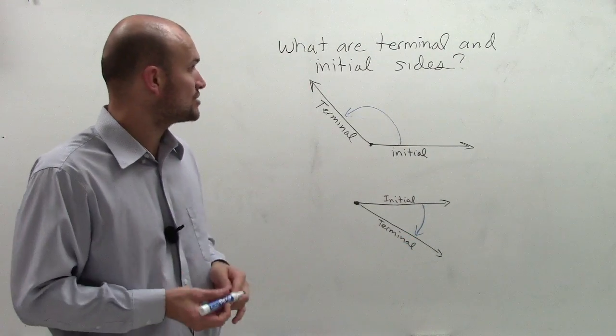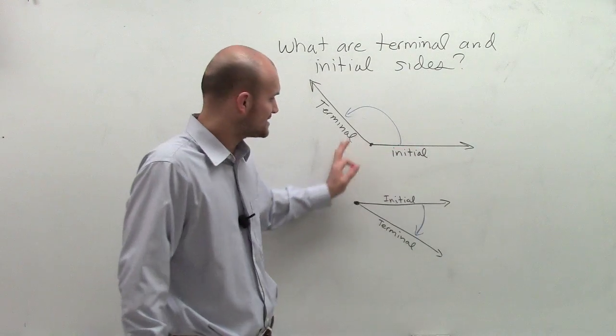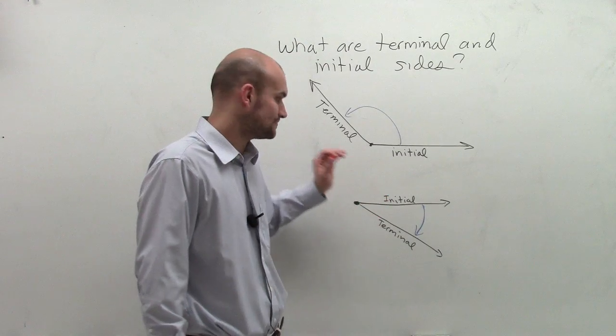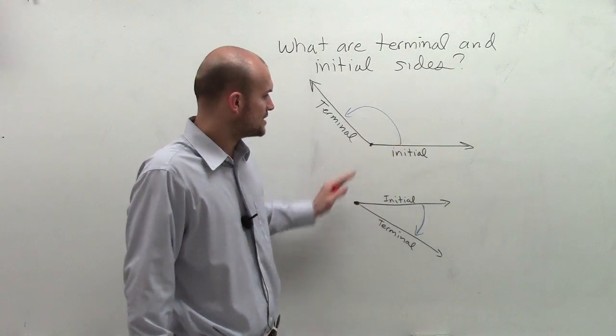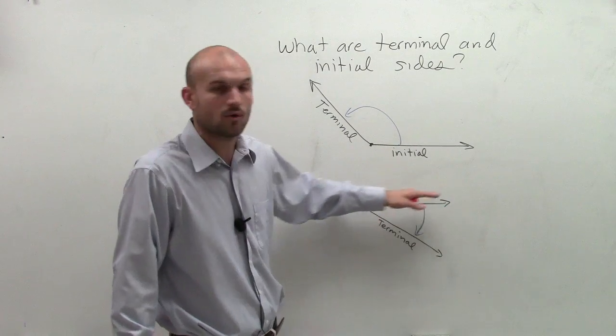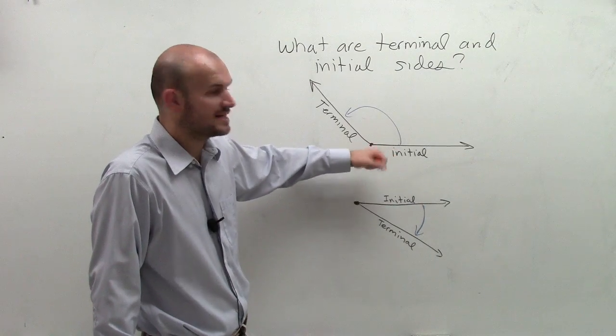So that's pretty much what terminal and initial sides are. Initial, remember, is your starting side. And if you look back at standard form, your initial side is always going to be on your x-axis, or in this horizontal direction or horizontal position.